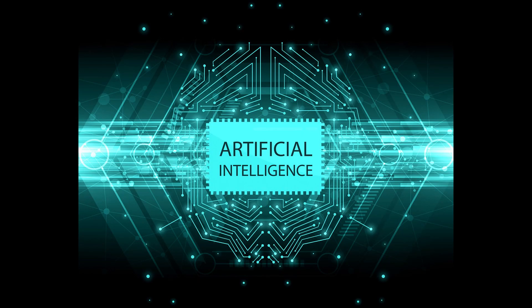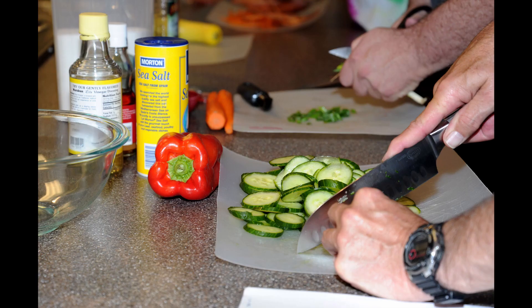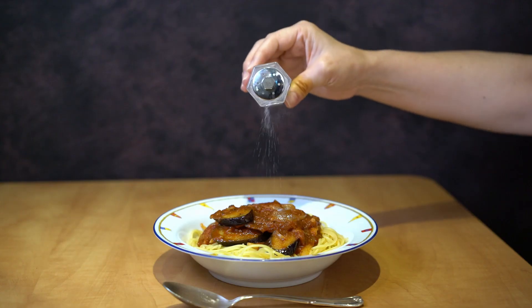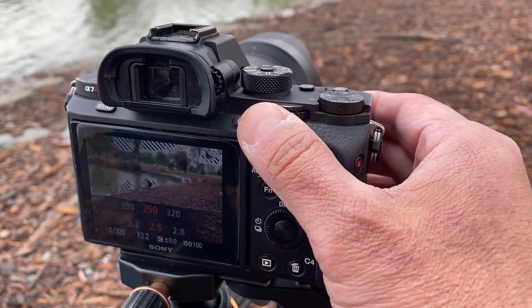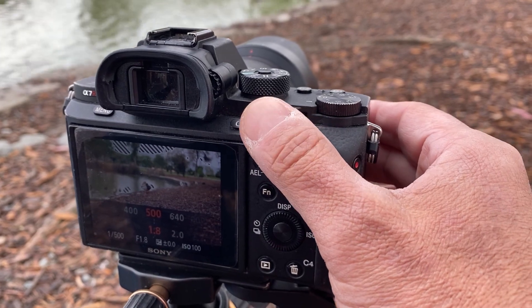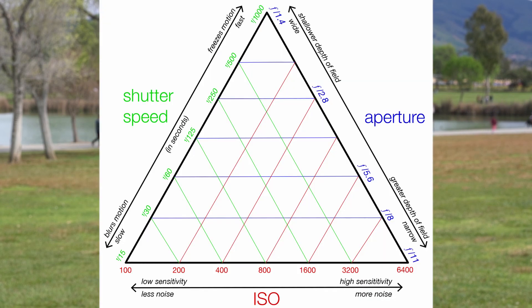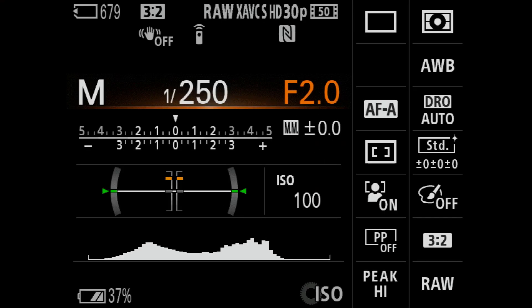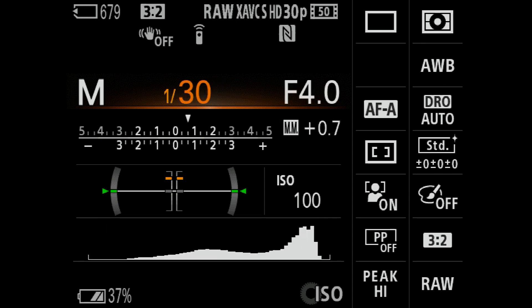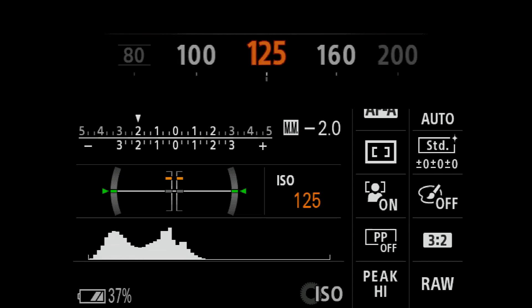In this age of smartphones and AI, do you still need to learn camera exposure? Even if you don't want to learn cooking, it's still good to know you can add salt and pepper to adjust the taste. In the same way, it's good to know you can turn one dial in program mode to get more background blur, for instance. There are so many tutorials about the exposure triangle, but I really don't think it makes sense. Aperture, shutter speed, and ISO are three independent parameters you can choose freely — not a balance.